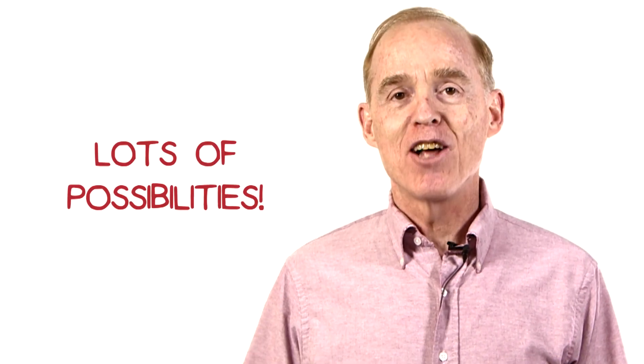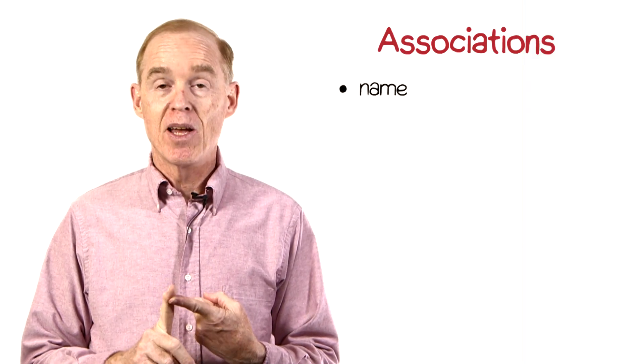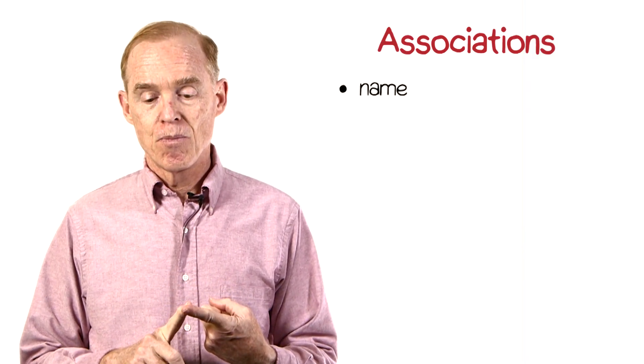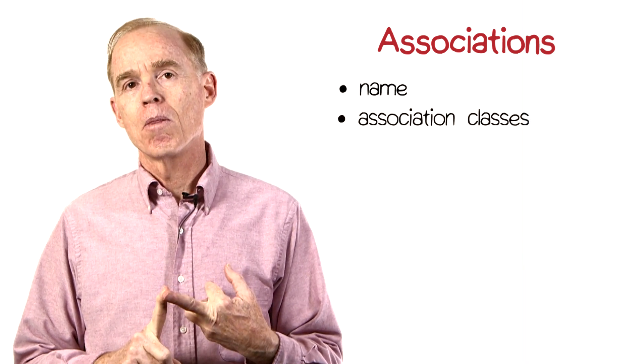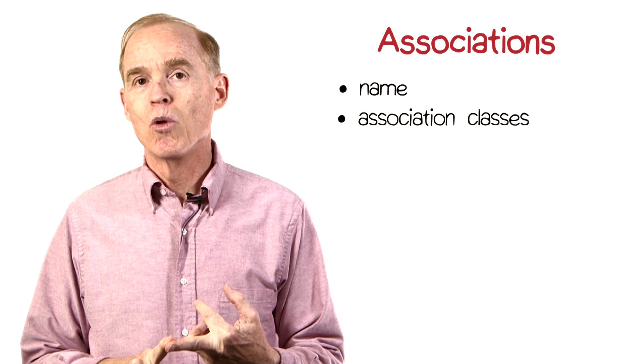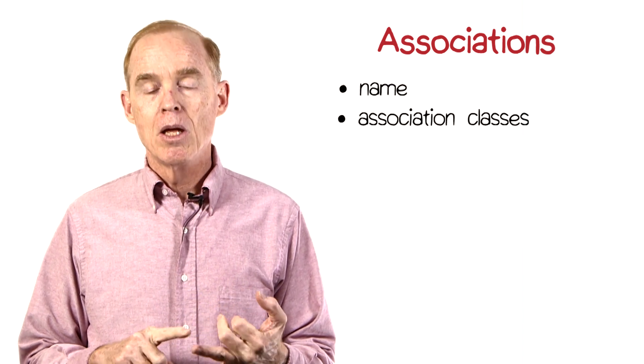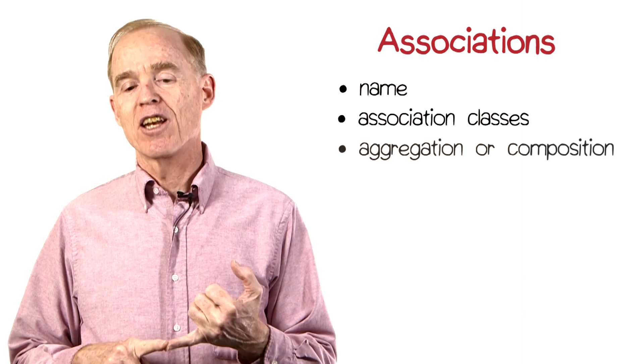There's lots of possible notational affordances for associations. You can have a name, as in contains. You can have association classes. They weren't shown in this diagram, but we'll look at them a little bit later. And you can have aggregation and composition.